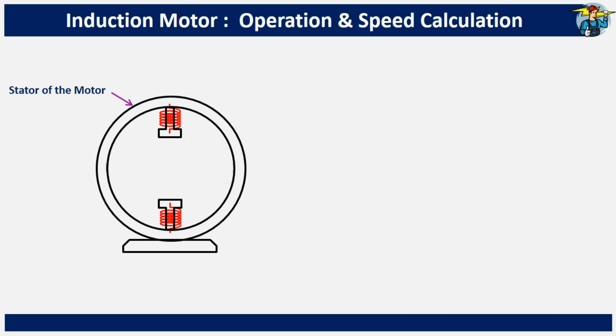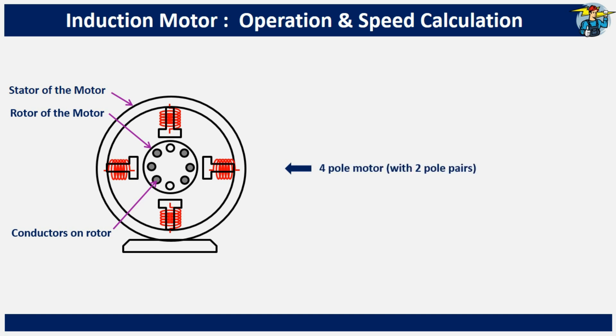Now, fix another pair of poles inside the stator like this, and arrange the windings on them too. Let's place the rotor of the motor in between these pole pairs. The small circles shown on the rotor indicate cross-sections of conductors on it. Now it is a four-pole motor, or a motor with two pole pairs.